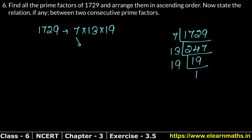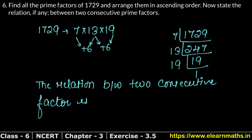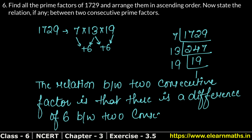So we write the relation: the difference between two consecutive prime factors is 6. That is, each consecutive factor has a difference of 6. Answer.